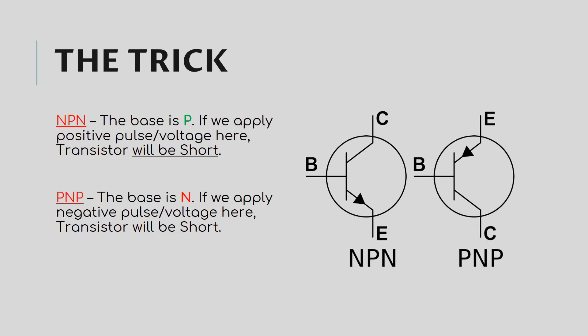At this point I want to tell you a trick. This is a practical one which you can apply while making transistor circuits. In NPN the base is P means positive, so if we apply a positive voltage at base, transistor will be in saturation region or you can call switched on. Else if a negative voltage is applied it will be switched off.